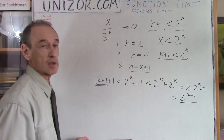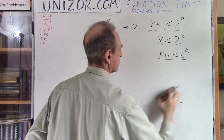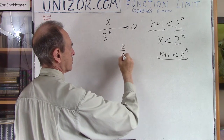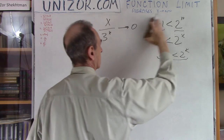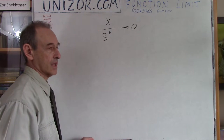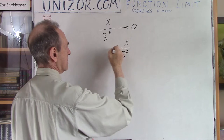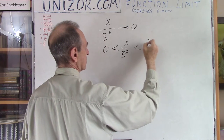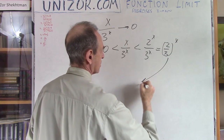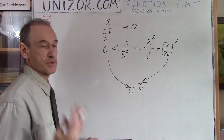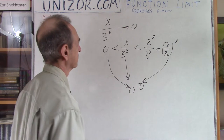From this inequality it immediately follows that x / 3^x goes to zero, because x < 2^x, so x / 3^x < 2^x / 3^x = (2/3)^x, and (2/3)^x goes to zero. Since x/3^x is greater than zero and less than (2/3)^x which goes to zero, this is a typical application of the squeeze theorem — two policemen and a drunk. That's why x/3^x also goes to zero.